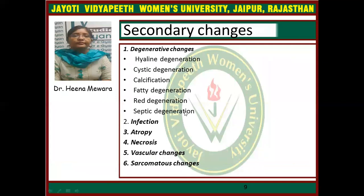Secondary changes may occur in fibroid in the form of degeneration: hyaline degeneration, which is the most common found in 65% of patients; cystic degeneration; calcification; fatty degeneration; red degeneration; and septic degeneration. In hyaline degeneration, the central part of the tumor becomes hyalinized because it is less vascular.